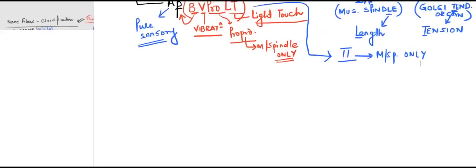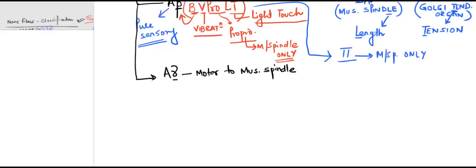After A-beta, in the Erlanger-Gasser system, we have A-gamma fibers. These A-gamma fibers are motor fibers to the muscle spindle. Until now we were discussing sensory fibers to the muscle spindle — Type 2 and Type 1A in the Lloyd system. Since A-gamma fibers are motor fibers, they will not come under the Lloyd system, because the Lloyd system is only for sensory fibers.